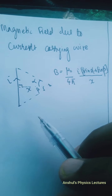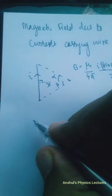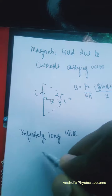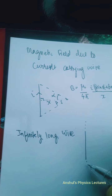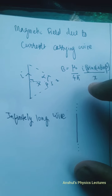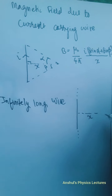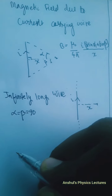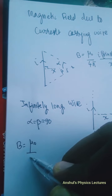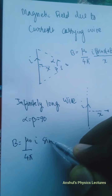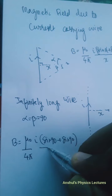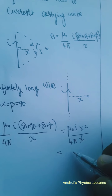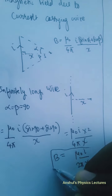Based on this formula we can study some cases. For example, what happens when the wire is infinitely long? For an infinitely long wire, both ends are at infinite distance, meaning the wire's length is very large, or the point is very close to the wire. In that case, both alpha and beta become 90 degrees. So the magnetic field formula becomes: B = (μ₀/4π) × i × (sin 90 + sin 90) / x = (μ₀/4π) × i × 2/x = μ₀i / 2πx.